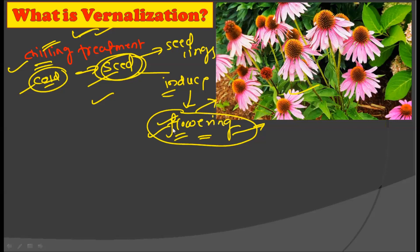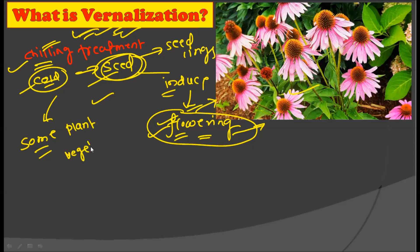To induce early flowering, we use vernalization in crop plants. Some plants require cold or chilling temperature during their early development to have flowering in their later development. Some plants are totally dependent on this vernalization process — without vernalization they will not flower and will remain only in their vegetative phase. Vernalization is quite an important phenomenon occurring in the plant kingdom.